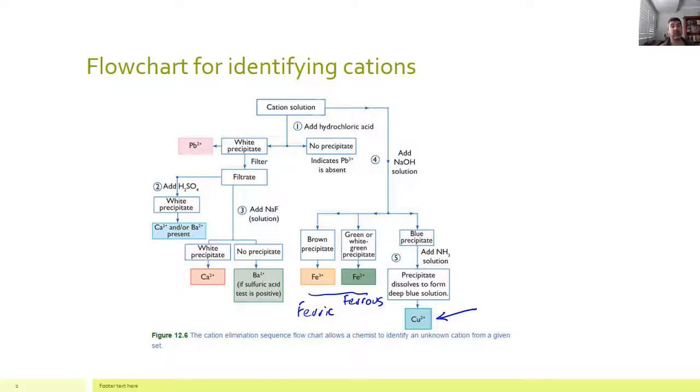So what should we do? Well, what we need to do when we're identifying ions is we need to have a series of steps that we're going to carry out. So the first one is this one. We add some hydrochloric acid. Now what that's putting in is a chloride ion. And we know that most chlorides are soluble.